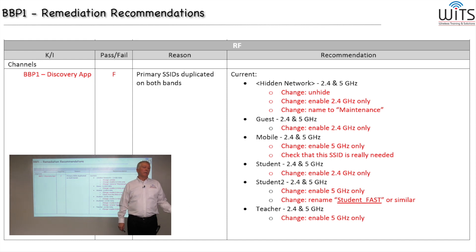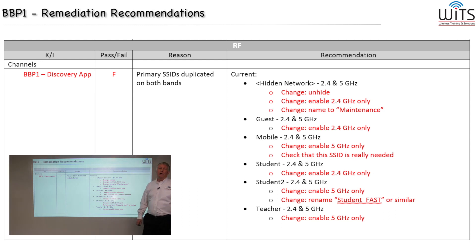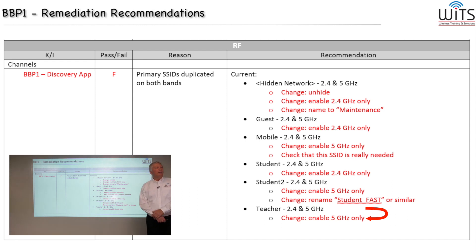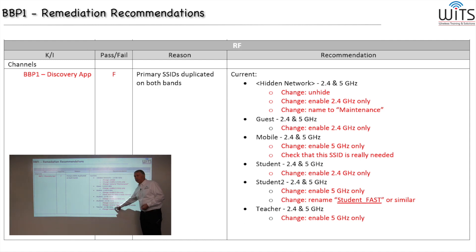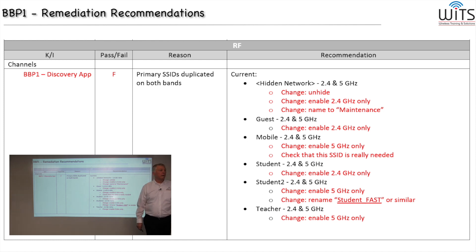Finally, the teacher SSID is also high priority, so we're moving it to 5 GHz only. In this case, the school has provided all teachers with dual-band capable equipment, so we can make that adjustment confidently. If you have a mix of 2.4-only and dual-band teacher devices, you might use the same naming trick — a 'teacher' SSID and a 'teacher_fast' SSID — to handle both scenarios.